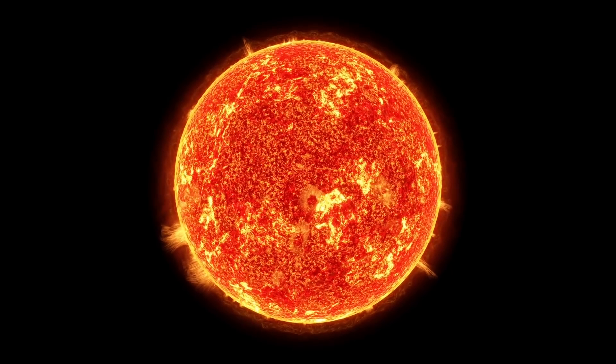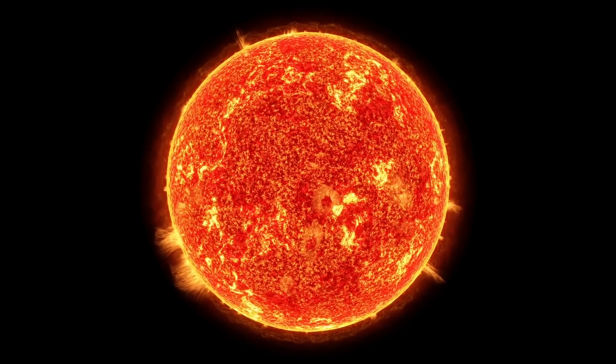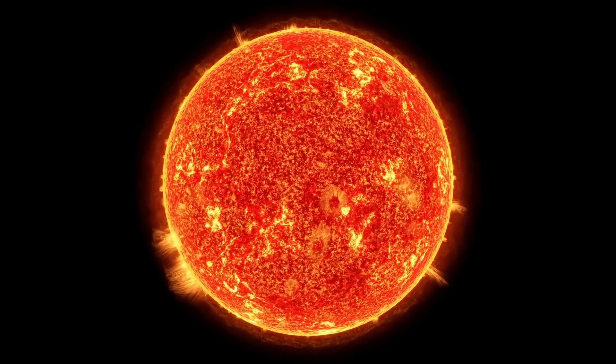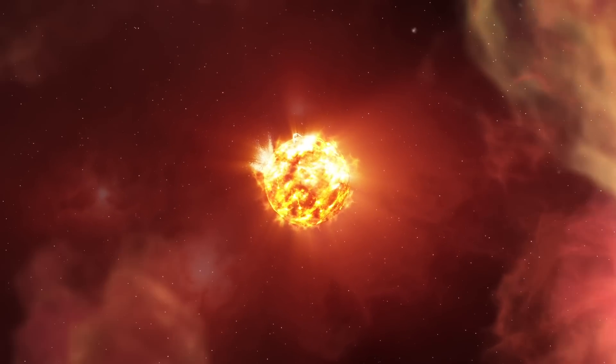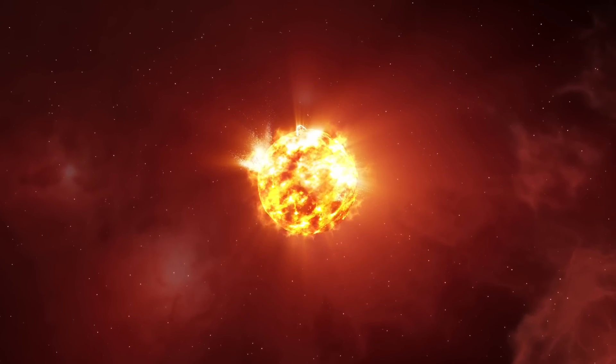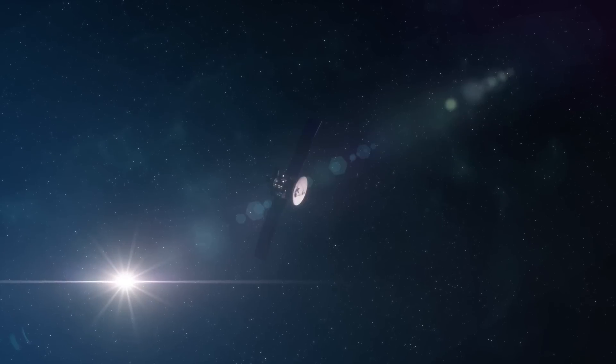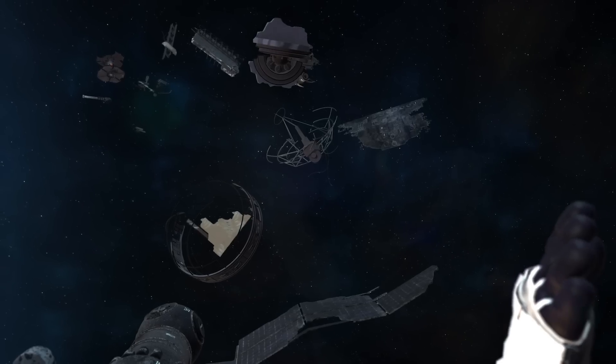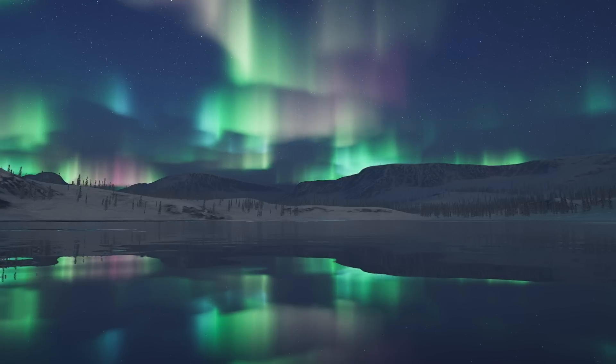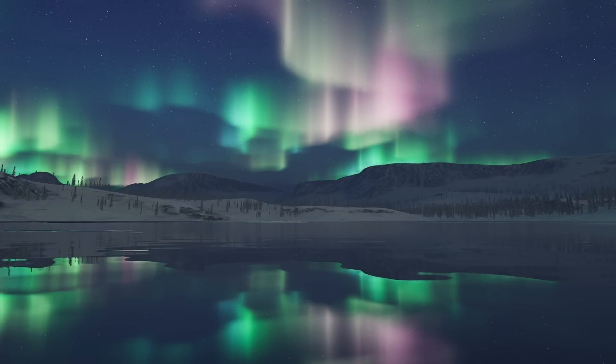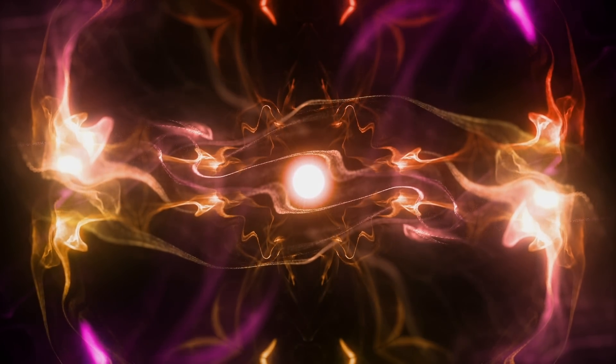Sunspots are not just fascinating solar features. They can sometimes produce very powerful solar flares and coronal mass ejections. These phenomena release vast amounts of energy and charged particles into space. When directed towards Earth, they can interfere with satellite communications, disrupt power grids, and pose risks to astronauts in space. Additionally, the increased solar activity can enhance the auroras, but also increase the radiation levels in the Earth's upper atmosphere.